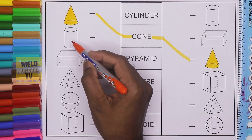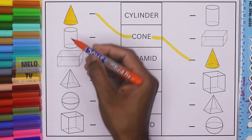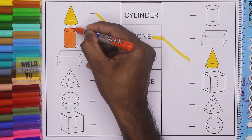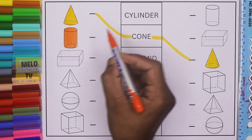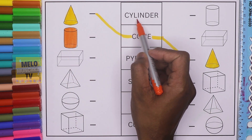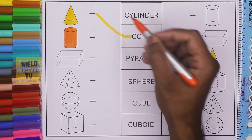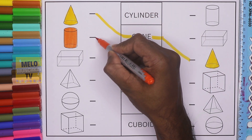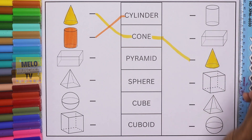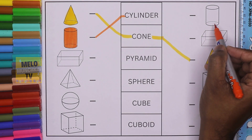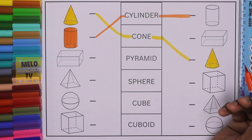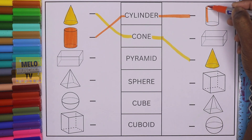Next I'll take orange color and color this shape. This shape is called cylinder. Let's color it first. Now where is the cylinder? C-Y-L-I-N-D-E-R — cylinder. So now I'll join this, and where is the cylinder? Here it is. I'll join it like this, and we'll color it.